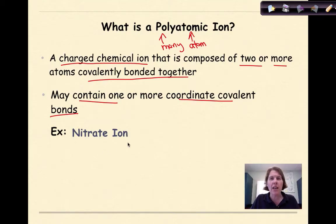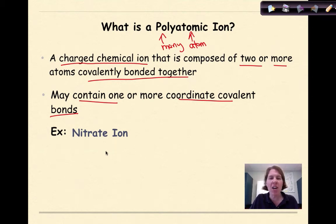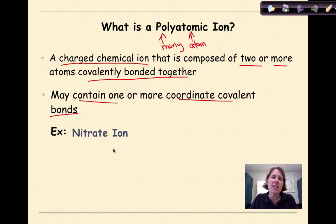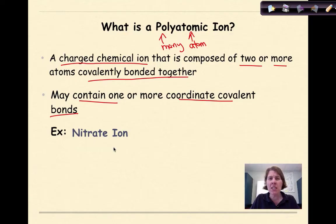We're going to look at the nitrate ion. Now, the probability of being asked on the Regents exam to draw out the Lewis dot diagram of something like a nitrate ion is essentially zero. But understanding how these nitrate ions come together and how they are covalently bonded is important. If you take AP Chemistry, you'll be introduced to resonance structures. But in a general sense, this is just showing you where the covalent bonds are in nitrate and where we might see a coordinate covalent bond.